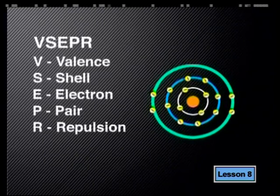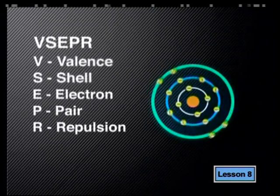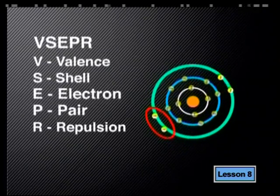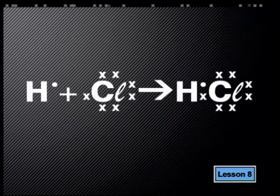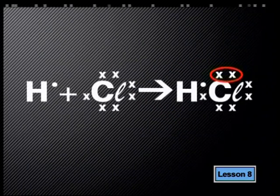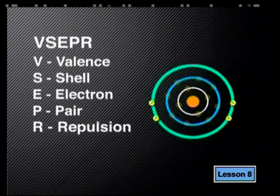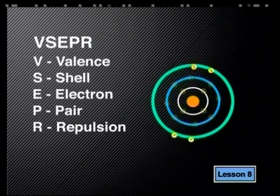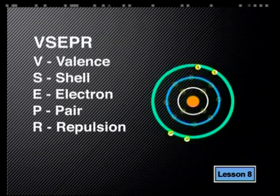So what does this mean? You should recognize the term valence shell — this refers to the electrons found in the outer energy level of an atom. Electron pair refers to pairs of electrons found in the valence shell. There are two types of electron pairs: a lone pair, where both electrons come from the same atom, and a bond pair, where the electrons come from different atoms. Repulsion is quite simple — objects with the same charge repel each other. So the VSEPR model is based on the force of repulsion between pairs of electrons in the valence shell, using the idea that electron pairs must be arranged as far away from each other as possible.